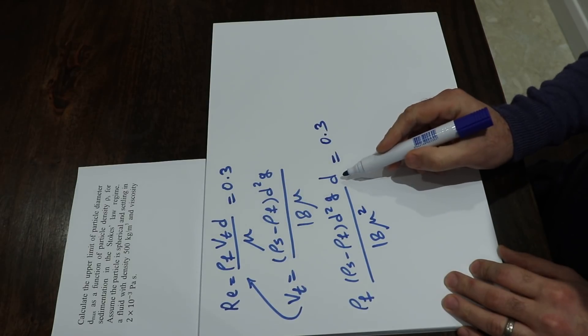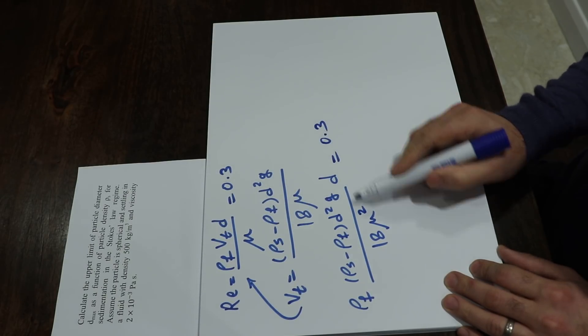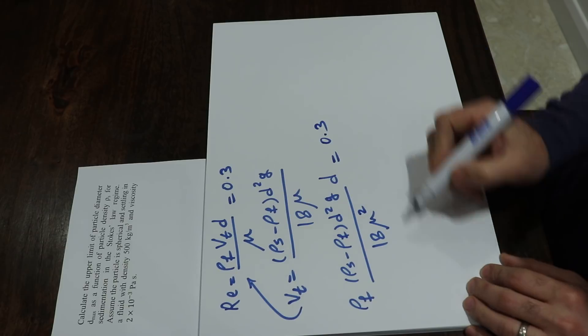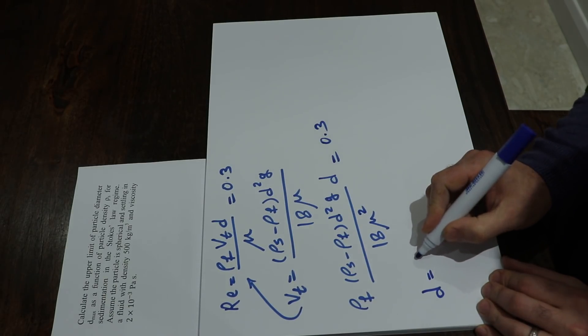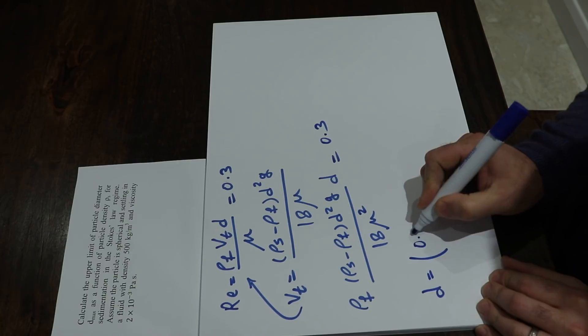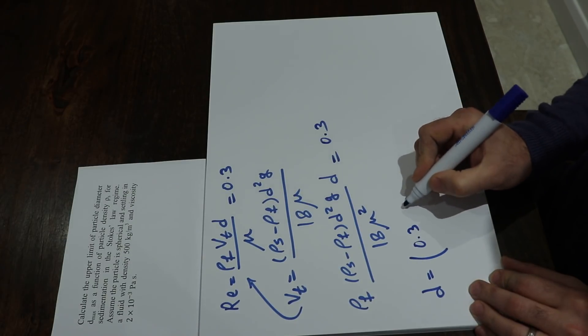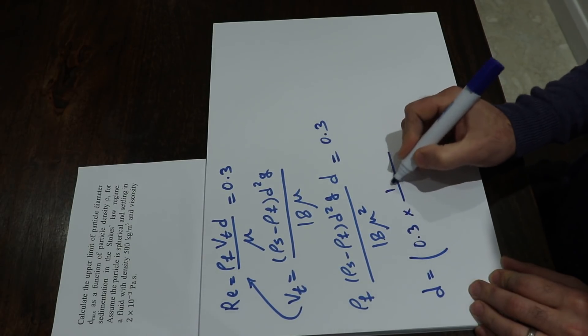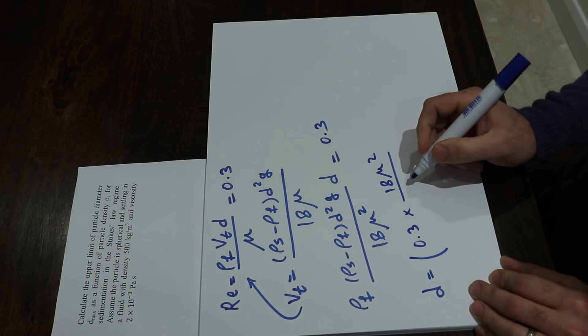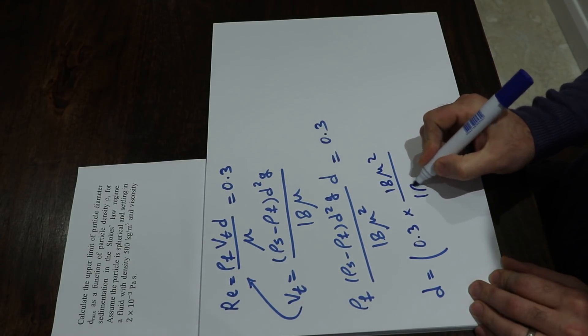Now if you rearrange this equation and express d as a function of the rest, we will get d equals 0.3 times 18 μ times μ squared divided by (ρ_s minus ρ_f) times ρ_f times g.